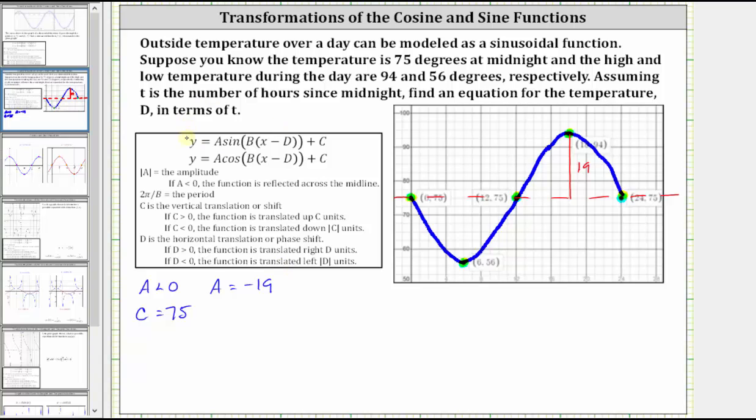So looking at the equation for our sine function, this equation here, we already know the value of a and the value of c. We're left to find the value of b, where two pi divided by b is the period, as well as d, where d indicates a horizontal shift, or phase shift. Well, the period is 24 hours, and therefore two pi divided by b must equal 24.